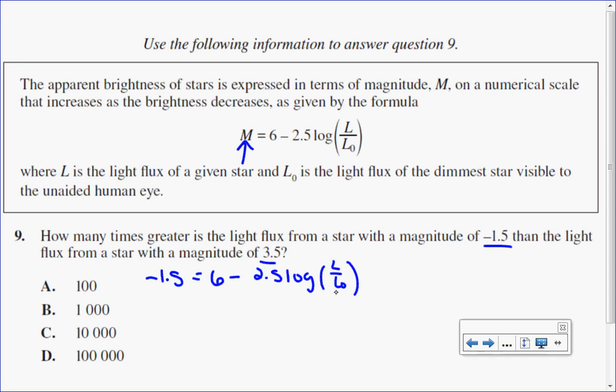To get this ratio by itself, which will tell us the comparison, I'll subtract 6 from both sides to get −7.5 = −2.5 log(L/L₀).